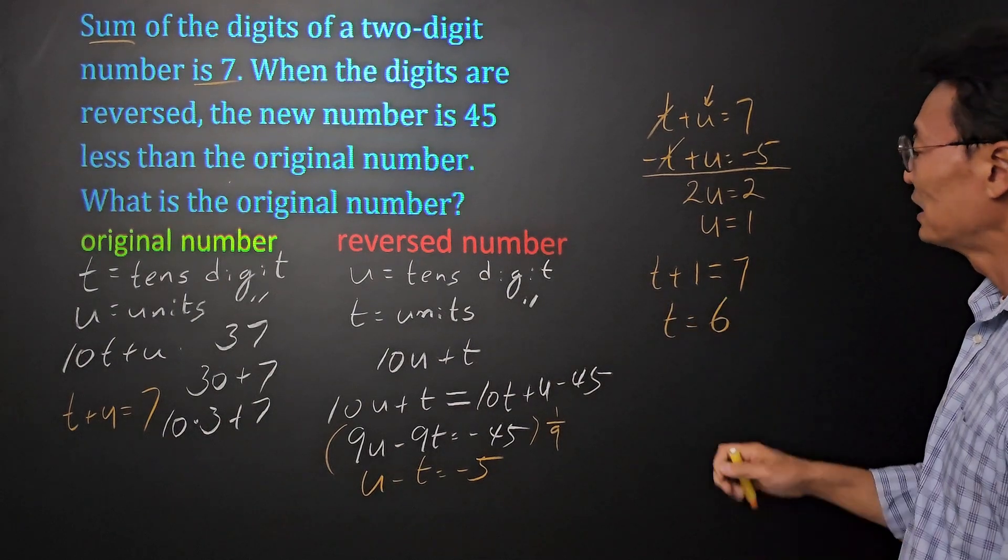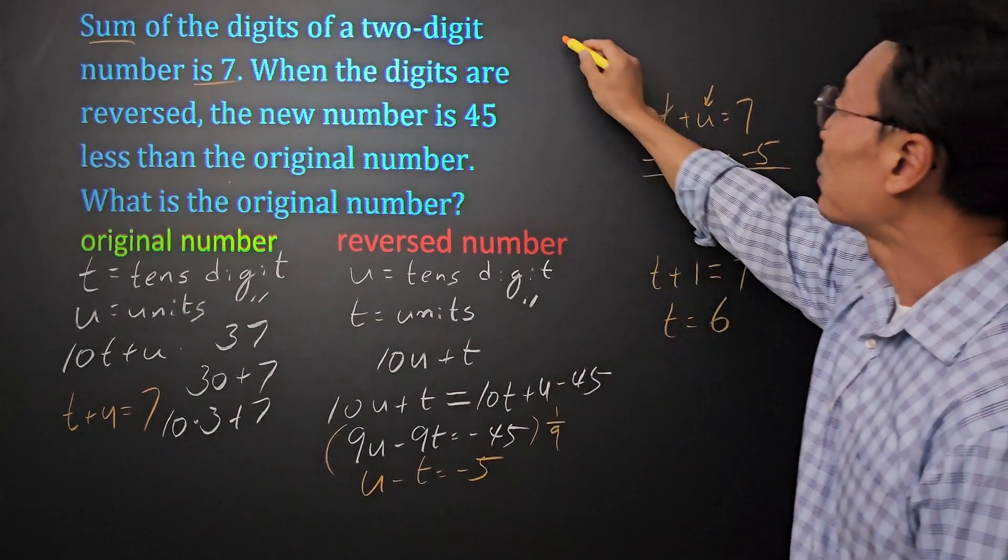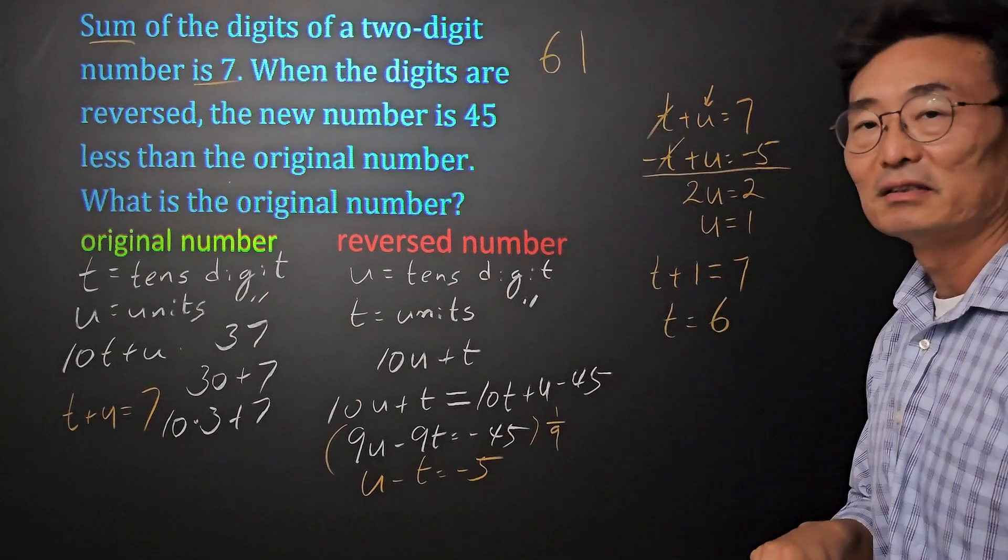So there you have it, both the units digit will be 1 and the tens digit will be 6, meaning our final answer will be 61.